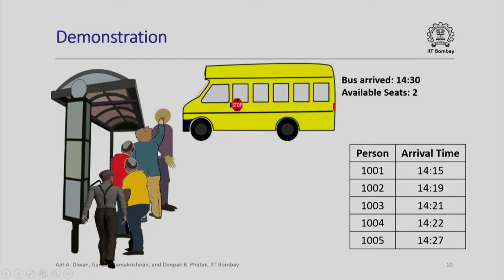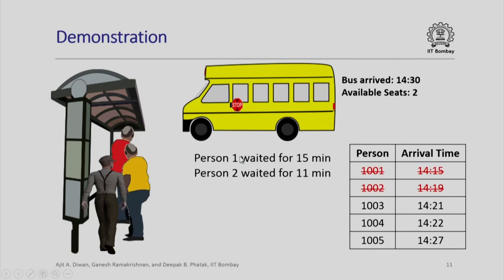Let us arbitrarily assume that there are only two available seats in this bus. So what will happen? Only the first two people in the queue will be able to board the bus. This is depicted here. When the first two people board the bus, we remove them from the queue and remember for later usage how long they waited. This person arrived at 1415 and the bus arrived at 1430, so he waited for 15 minutes. The next person similarly waited for 11 minutes.